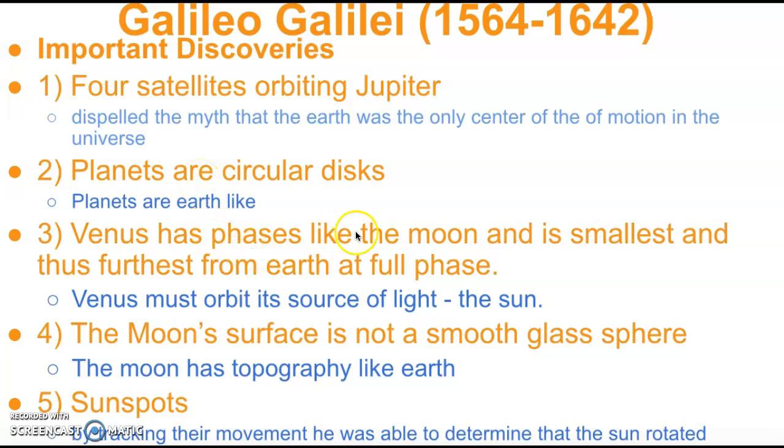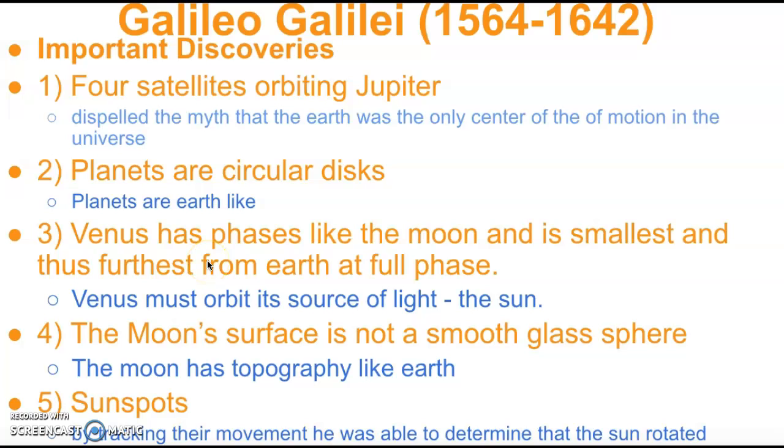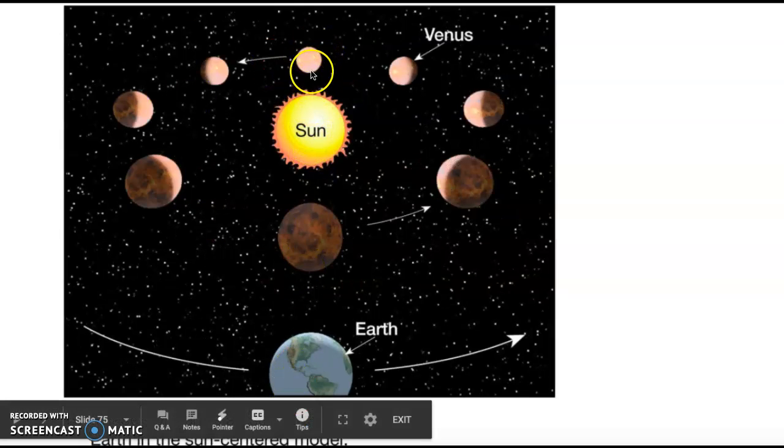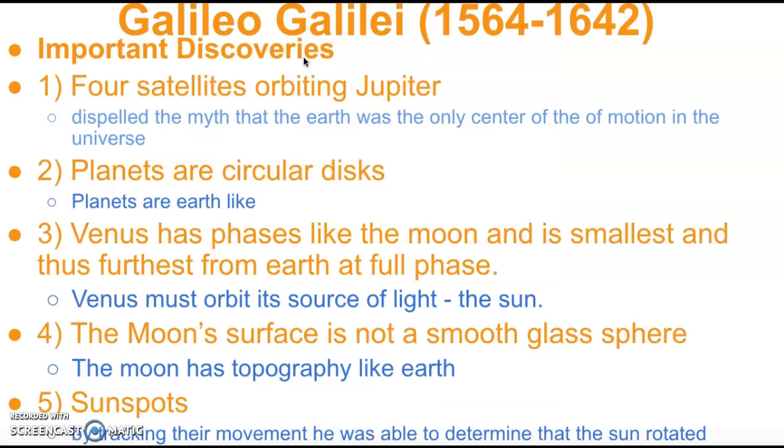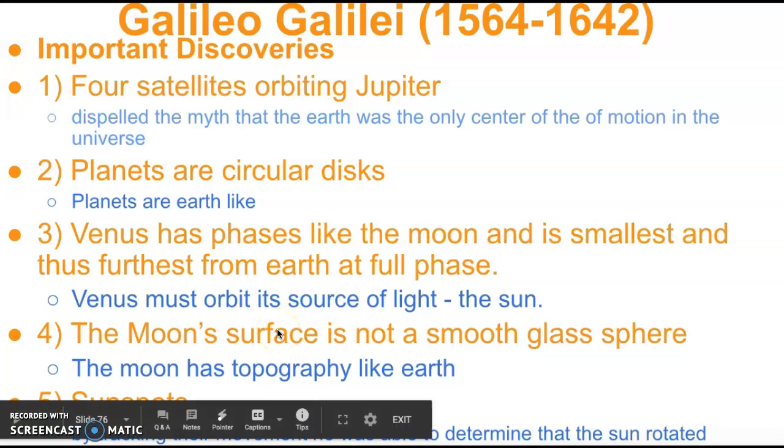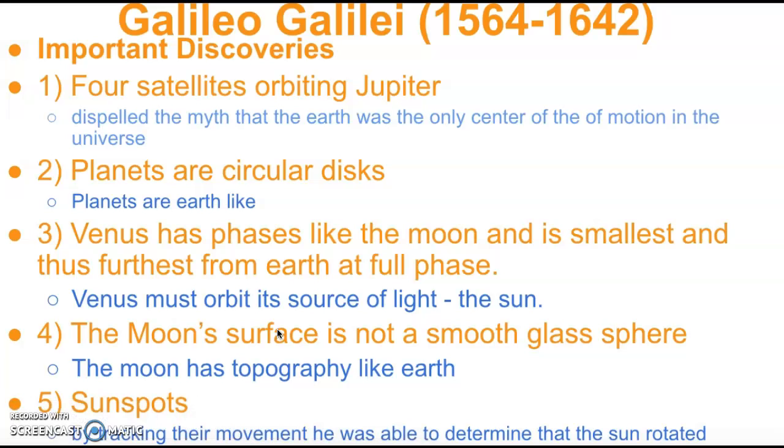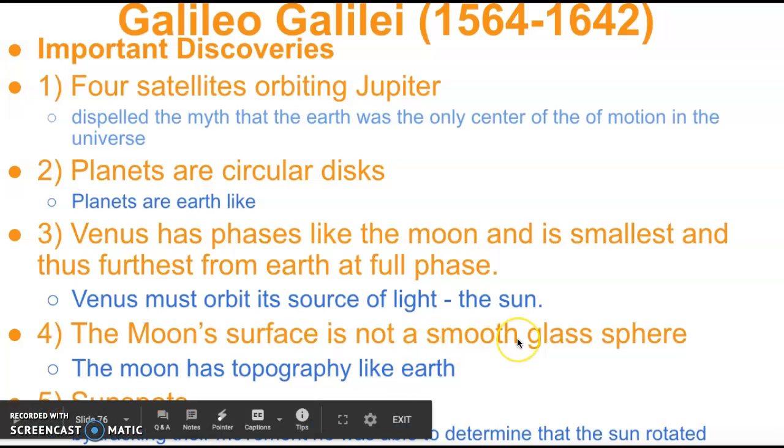So he discovered that Venus goes through phases like the moon and is the smallest and farthest from Earth at full phase. So when it's at its full Venus, it is all the way across, farthest from us, which would make it smaller from our perspective. This means that Venus must orbit the sun. He also discovered the moon – by looking at the moon, he discovered that there were cracks on the moon's surface and valleys and craters and hills and mountains and plains. The moon has topography. That's a pretty big deal because before this, they just assumed that it was smooth.